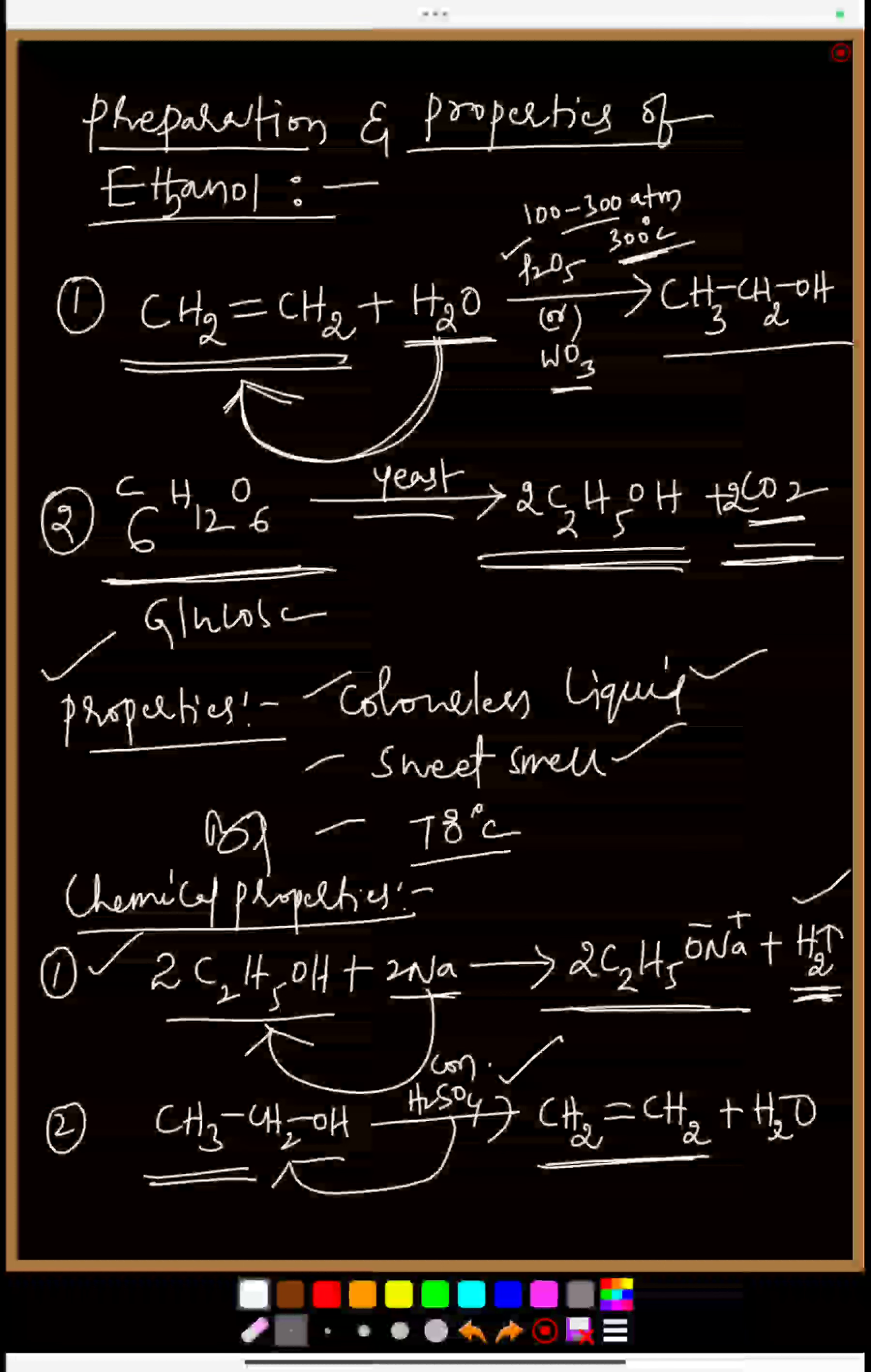Physical properties are: it is a colorless liquid which is having sweet smell, boiling point is 78 degrees Celsius. And very important point: ethyl alcohol dissolves in water and forms homogeneous solution, homogeneous mixture.